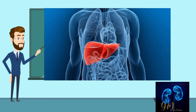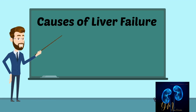The liver is one of the most important organs in the body. Its functions include processing digested food from the intestine, controlling levels of fats, amino acids and glucose in the blood, combating infections, clearing the blood of particles and infections, manufacturing bile, and storing iron, vitamins and other essential chemicals.